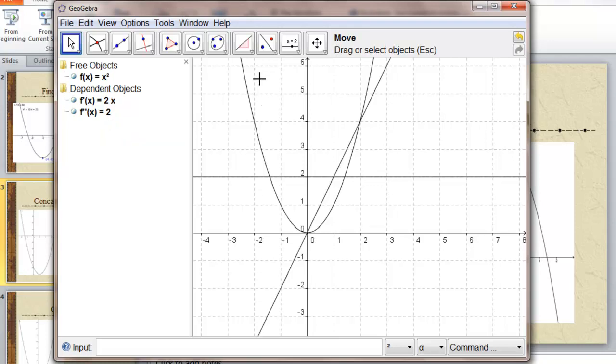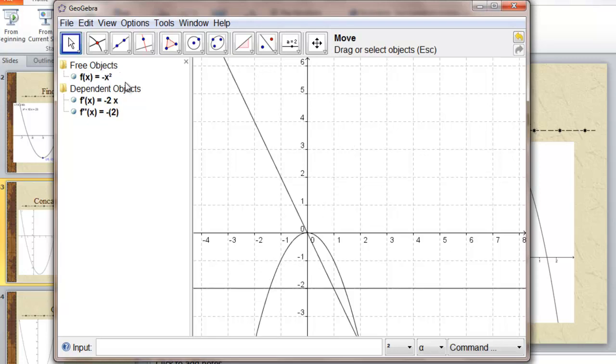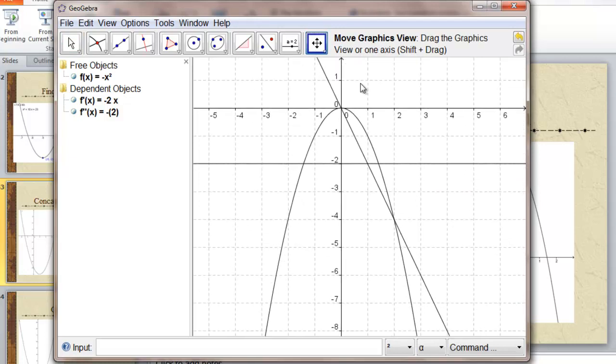Even when the slope is negative, it's always getting more positive. We can just change the positive coefficient to a negative coefficient to show you a concave down parabola.